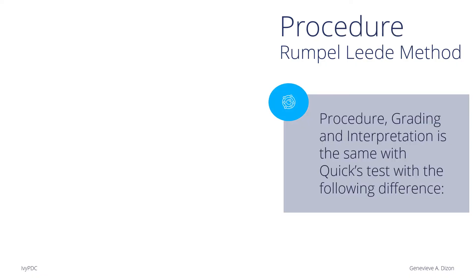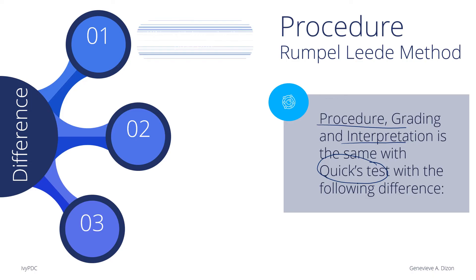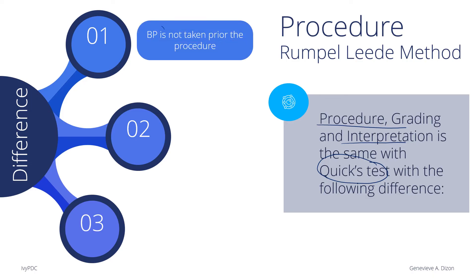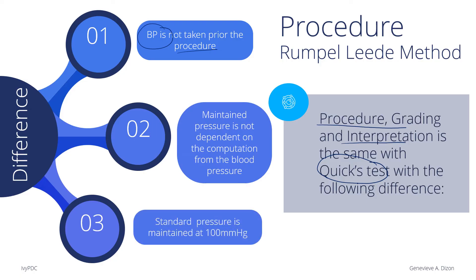Next is the Rumpel-Leede method. The grading, procedure, and interpretation are exactly the same as the Quick's test, but with the following differences: the blood pressure is not taken before the procedure because a standard pressure of 100 mmHg is maintained. This means the maintained pressure is not dependent on a computation of the patient's blood pressure.